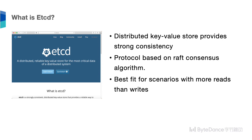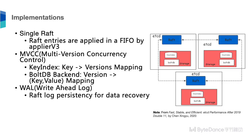etcd's best-fit scenario is when you have more reads than writes in your database environment. The graph on the right side shows how an etcd cluster looks like. The Raft protocol running on each of the etcd cluster nodes behaves like a state machine — it changes state based on messages coming from other peers. In etcd, it uses a single Raft, and the Raft entries are applied in a first-in-first-out order.